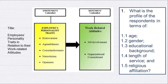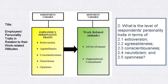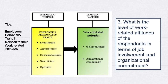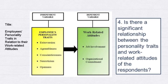For example: 'What is the profile of respondents in terms of age, gender, educational background, length of service, and religious affiliation?' Then write a question about the independent variable — in this title, the independent variable is personality traits: 'What is the level of respondents' personality traits in terms of extroversion, agreeableness, conscientiousness, neuroticism, and openness?' Next, develop a question about the dependent variable — in this title, the dependent variable is work-related attitudes: 'What is the level of work-related attitudes of the respondents in terms of job involvement and organizational commitment?' Also, formulate a question on the significant relationship between the independent variable and dependent variable: 'Is there a significant relationship between the personality traits and work-related attitudes of the respondents?'